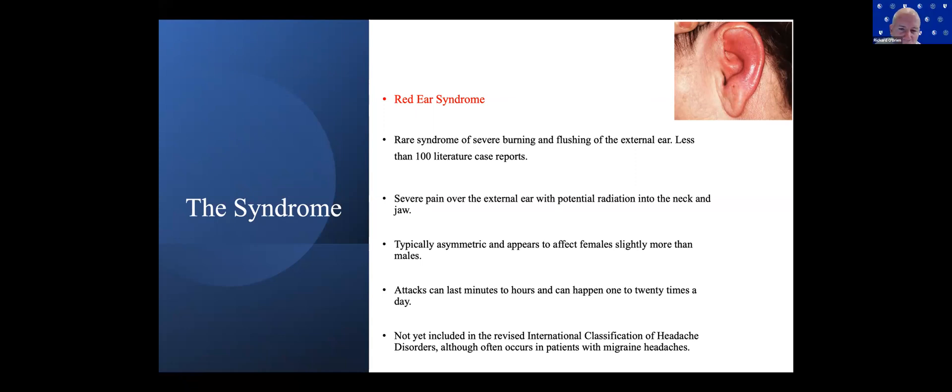If you want to find case reports about it, there's three to five maybe that you can find. It's a rare syndrome of severe burning and flushing of the external ear, just like you can see there. It's very warm to the touch. The patient's often described like their ear is on fire. It can radiate down into the jaw and neck along the pattern of that greater auricular nerve.